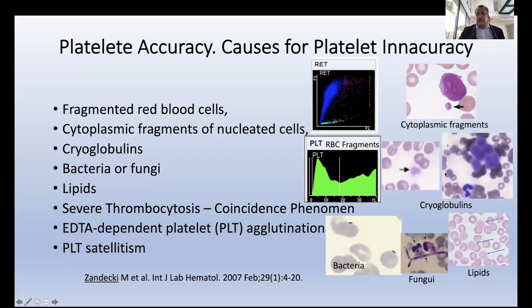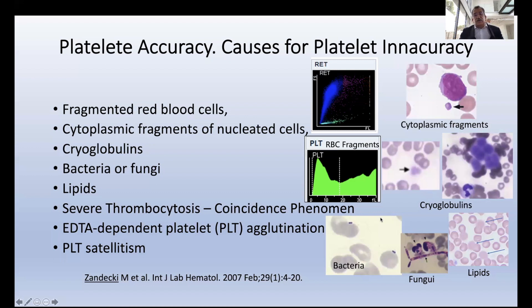Cryoglobulins can also interfere with the impedance count but not with optical platelets. Bacteria or fungi — you can see here diplococci that can be counted as platelets, and the spores of fungi can appear as platelets. Another possible interference is lipids: you can see in the blood smear particles of different sizes that can be confused with platelets. This happens in patients in intensive care or receiving parenteral nutrition.